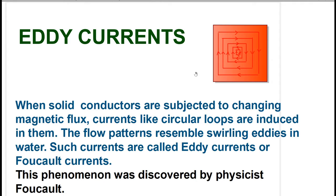What is eddy current? When a solid conductor is associated with a varying magnetic field, swirling eddy-type currents are produced in the solid conductor. Such currents are called eddy currents.